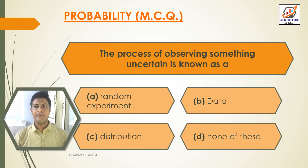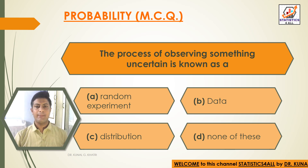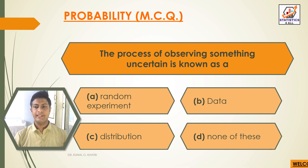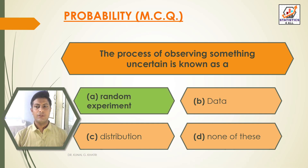Next question: the process of observing something uncertain is known as — Option A: random experiment. Option B: data. Option C: distribution. Option D: none of these. The answer is Option A — random experiment.